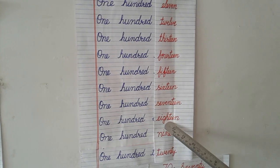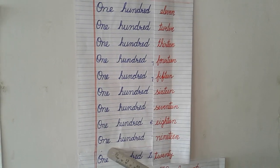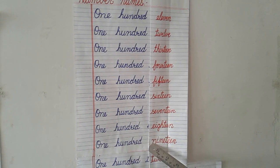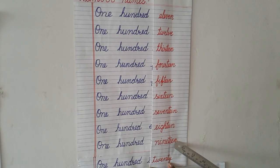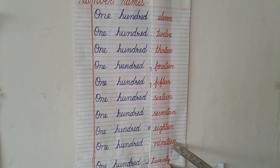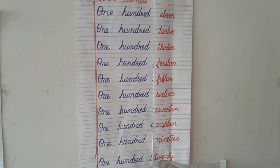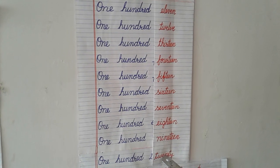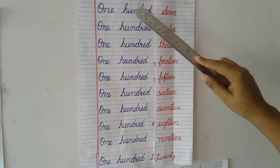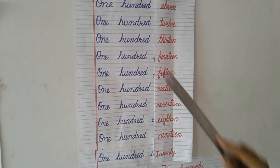ONE HUNDRED EIGHTEEN. ONE HUNDRED NINETEEN. ONE HUNDRED TWENTY. Same way we are going to write till 200.